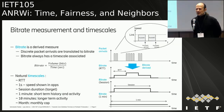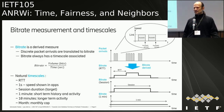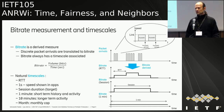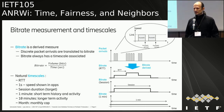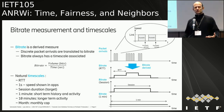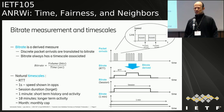Bitrate is a derived measure — there are only discrete packet arrivals, which can be translated to bitrate, and bitrate always has a timescale associated. Natural timescales include RTT, one second, session duration, one minute, ten minutes, and even a month. For example, if more packets arrive in an RTT, the RTT bitrate will be larger. There can also be a session bitrate and bitrates averaged over periods larger than a session.